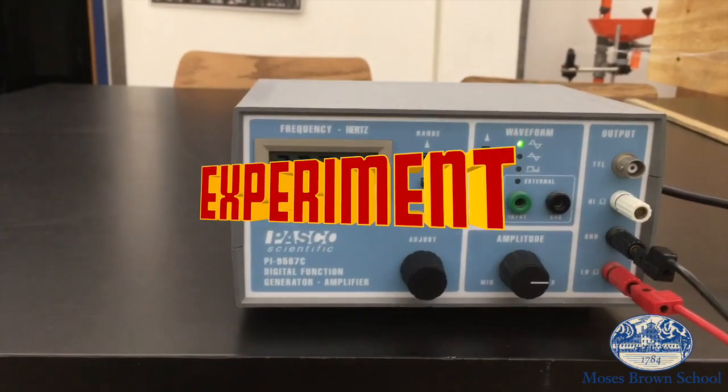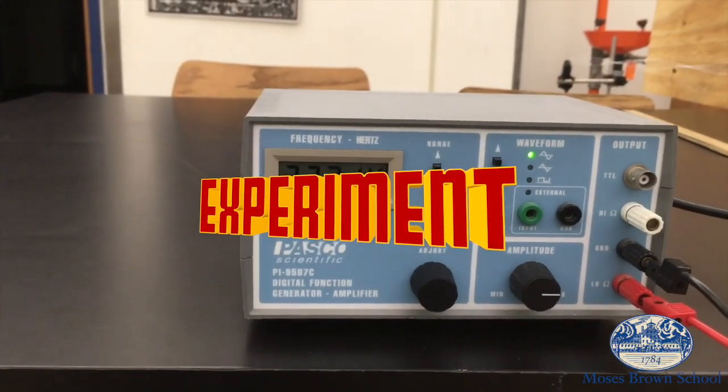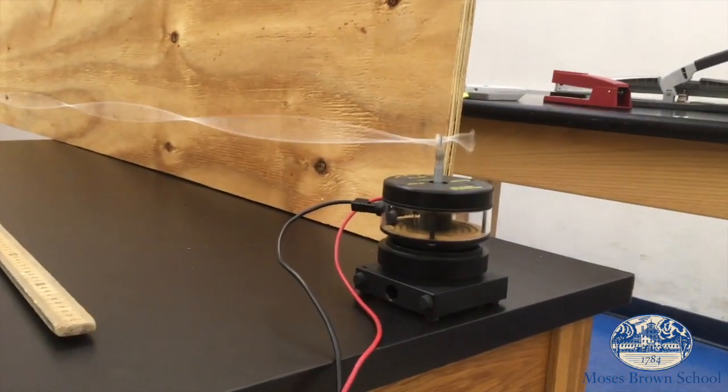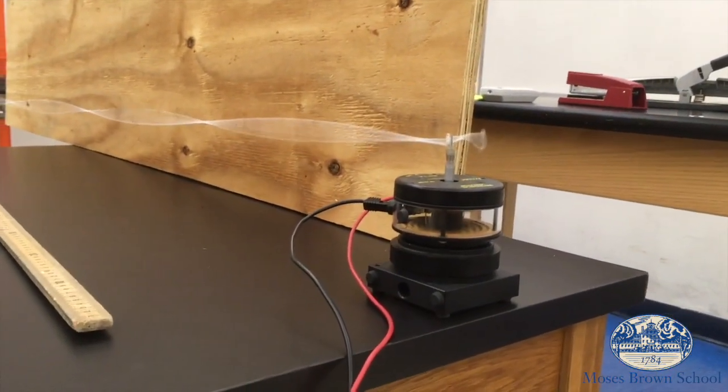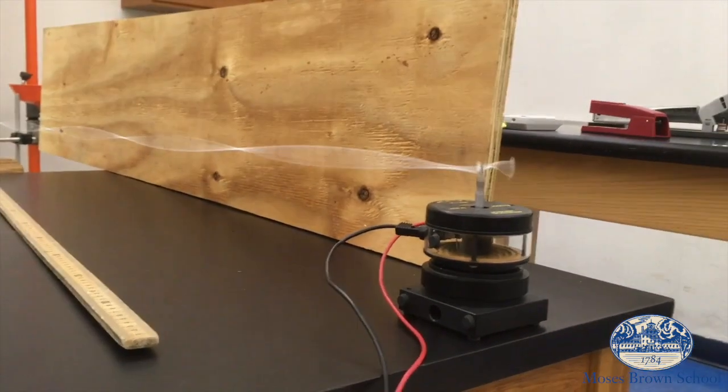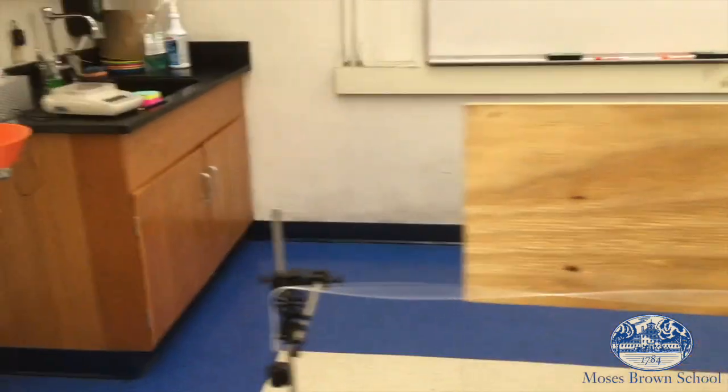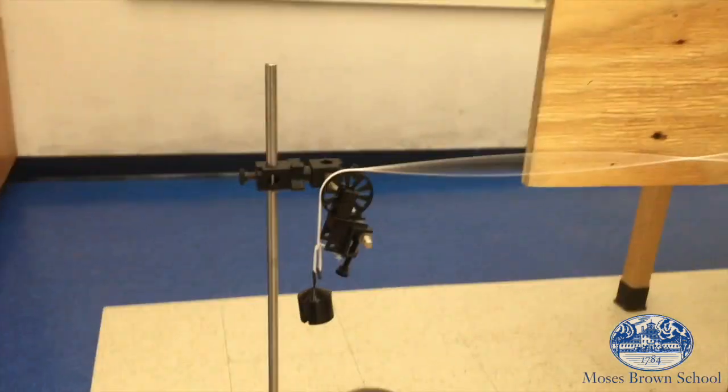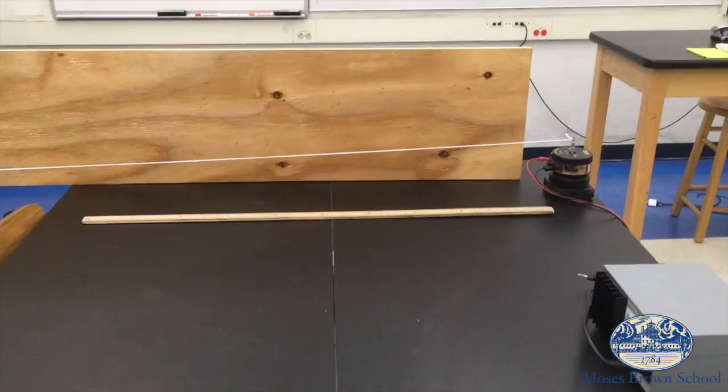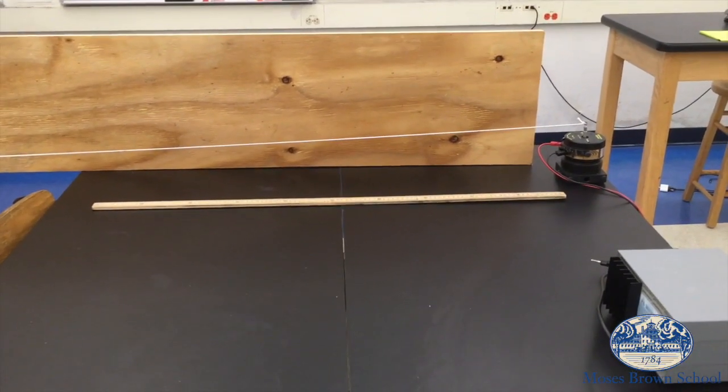A power supply that oscillates at a frequency that we can vary with controls on the front. We've got a mechanical oscillator that vibrates up and down that is connected to a string. You can see the string is vibrating up and down and at the other end of the string we have a pulley and we have some weight connected over the end to create tension in the string. The length of the string is 1.79 meters.